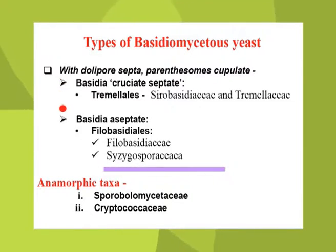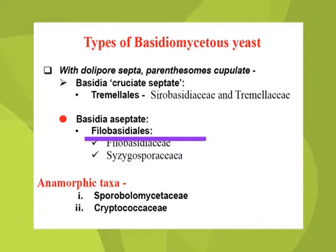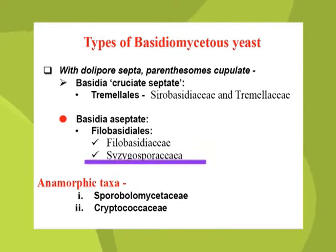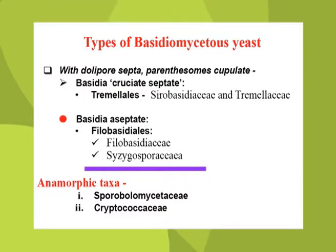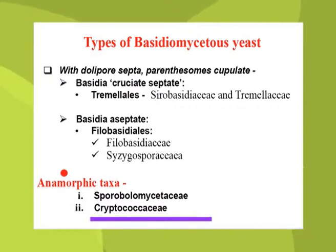In the next subgroup, basidia are basally septate and include only one order, Filobasidiales, under which two families — Filobasidiaceae and Syzygosporaceae — are included. The anamorphic taxa are grouped into two families: Sporobolomycetaceae and Cryptococcaceae.